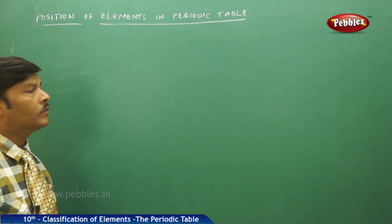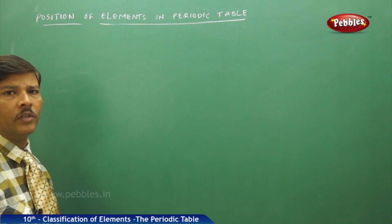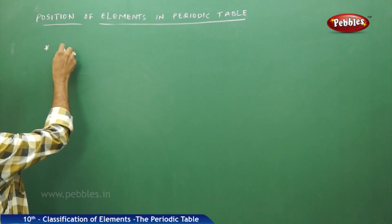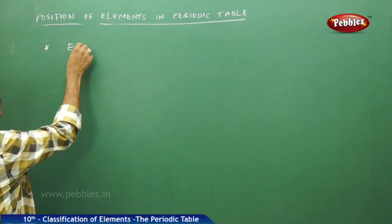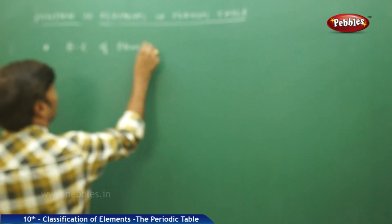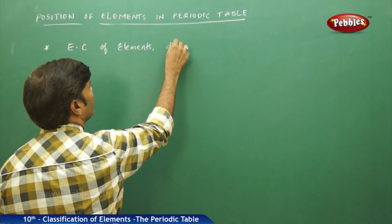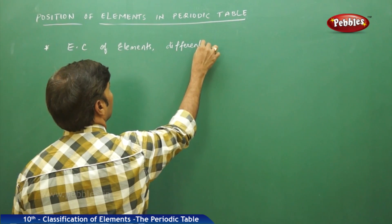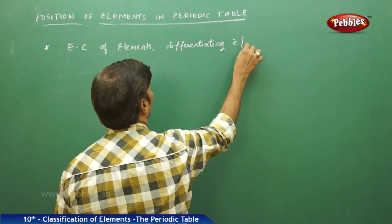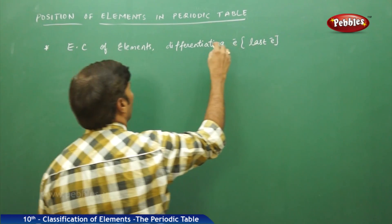The next topic under our discussion is the position of elements in the periodic table. The position of elements in the periodic table depends on the electronic configuration of elements, and this electronic configuration should be in the form of the differentiating electron — that is, the last electron of the element.